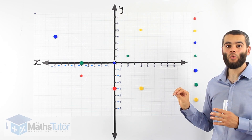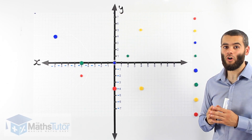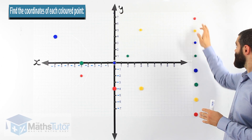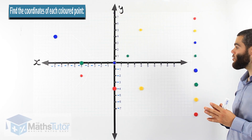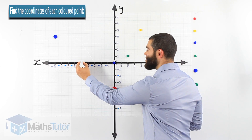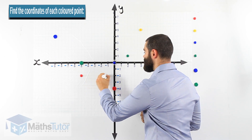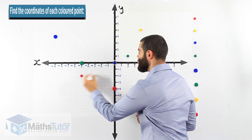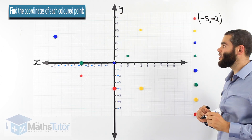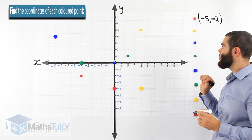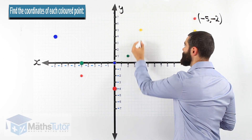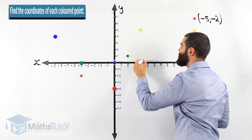Now that we know how to plot coordinates, let's learn how to find coordinates when points are already on the number plane. The first point we're looking for is the red coordinate. We locate it, and we always start with the x-axis first — it's at negative 5, and the y-axis is at negative 2, so the coordinate is (-5, -2). The yellow point is at 4 on the x-axis and 5 on the y-axis, so it's (4, 5).